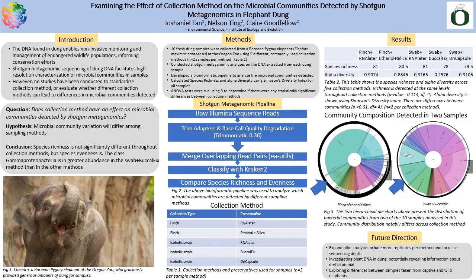In spite of this, no studies have been done to standardize the collection methods of samples from wild animals for shotgun metagenomics, or to evaluate whether different collection methods can lead to differences in the microbial communities which are detected in a sample. In this research, my question is: does collection method have an effect on microbial communities detected by shotgun metagenomics?